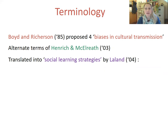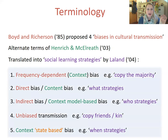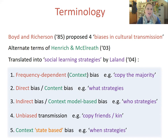I leave you with a colour-coded cheat sheet to help with any confusion over the terminology in this field, especially if you decide to read further — further readings are indicated on the website. Boyd and Richardson proposed biases for cultural transmission back in 1985. Since then, Henrich and McElreath have used alternative terms, as has Kevin Laland, who translated the terms into social learning strategies in 2004. Each of these key authors is highlighted in different colours so you can see how their terms correspond. That's all from me — I hope you enjoyed the lecture and wish you well with your studies or research. Thank you very much.